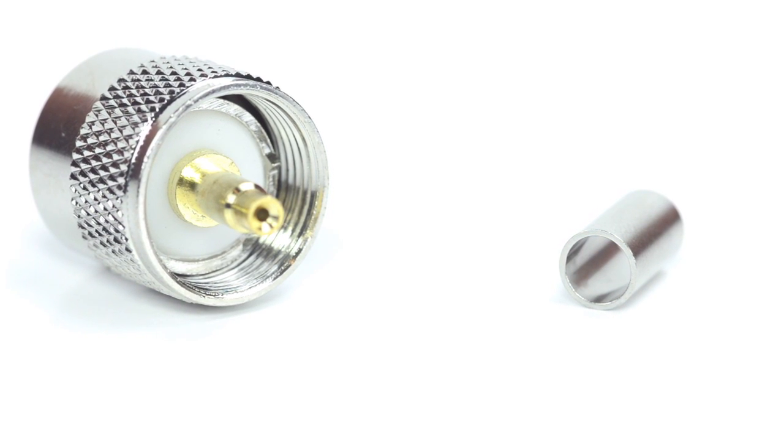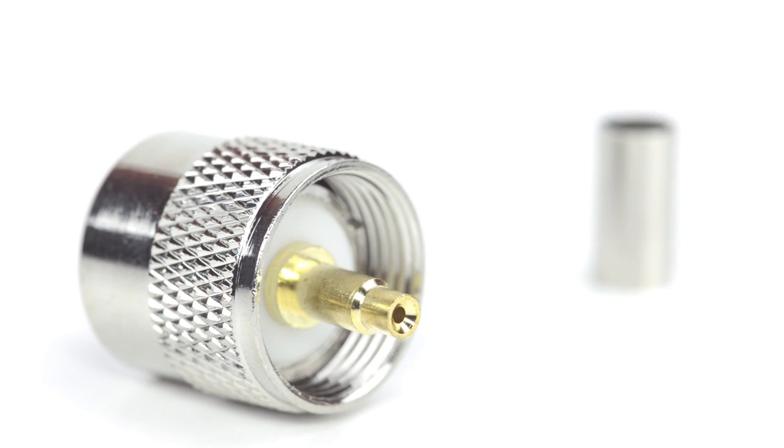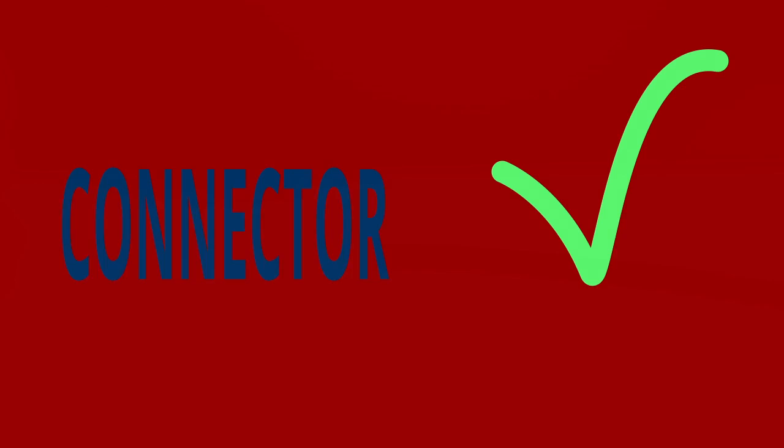For this installation, you will need a coax stripper, coax cable, a crimp tool, and the UHF connector. Keep in mind you will want to make sure that your coax stripper, crimp tool, and connector match the coax cable that you are installing.